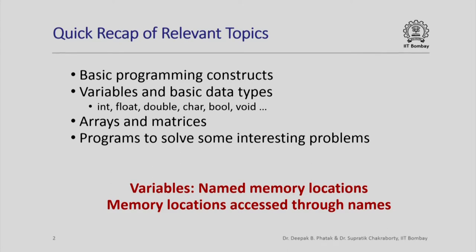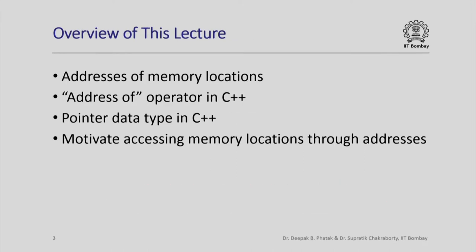In all of this we have basically used variables as named memory locations, accessing them through the names of the corresponding variables. In this lecture we want to break away from that paradigm and instead access memory locations through their addresses. We must first understand what addresses of memory locations are, and we are going to see the address-of operator in C++, which naturally leads to a new data type called the pointer data type in C++.